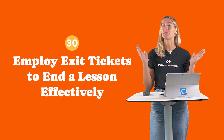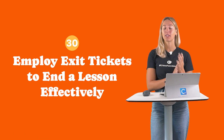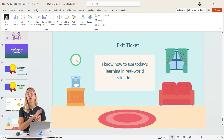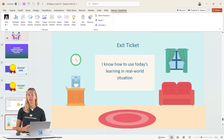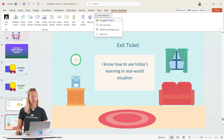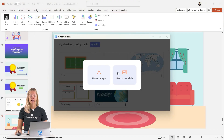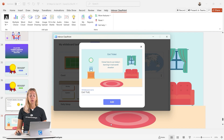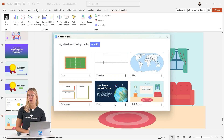Lastly, number 30: Employ exit tickets to end your lesson effectively. You can swiftly assess your students' understanding and gather feedback through all the various ClassPoint question types. If you want to reuse an exit ticket across all of your presentations, you can generate a slide and then designate it as a whiteboard background. That way, you can use a quick poll question and reuse this slide whenever you need.